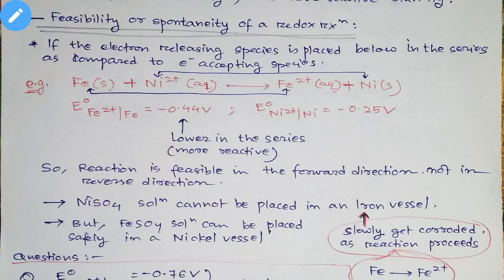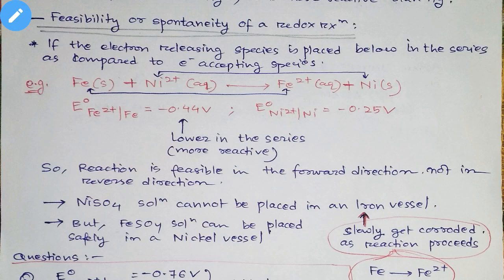Some factors are there to determine the spontaneity of a redox reaction, because here we are talking about redox reactions where oxidation and reduction both take place simultaneously. So the example I have taken is: iron reacts with nickel two-positive, changing to iron two-positive and nickel. The question here is: is this reaction spontaneous? For that, we need to know the E⁰ values — the electrode potential values of the electrodes. The two electrodes here are iron and nickel.